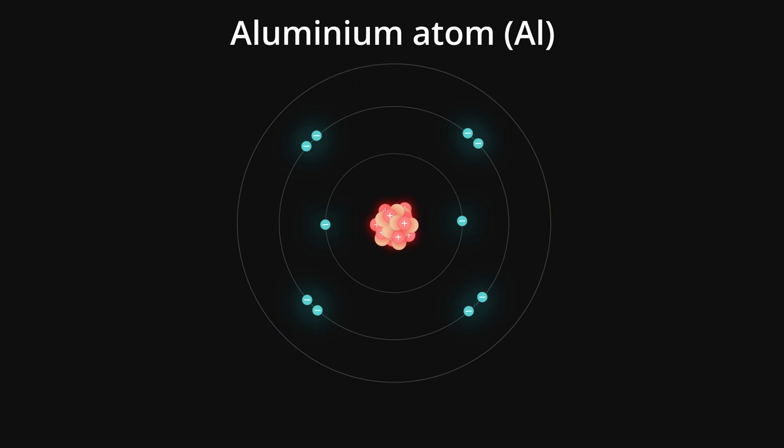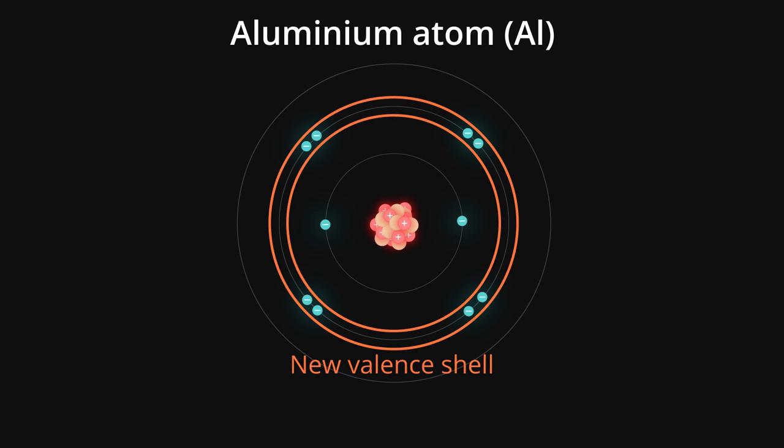This is how all the metals form ions. Does that mean that it now has zero electrons in its outer shell? No. Look, as the electrons from the third shell go away, the second shell becomes the outer shell. And that had eight electrons to start with.